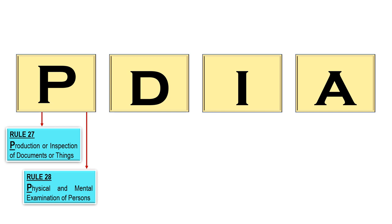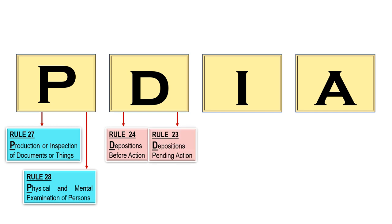How about letter D? Letter D is of course the famous deposition. Take note that when we talk about deposition, there is a deposition before action or before the case is filed — that is Rule 24. There is also a deposition pending action — that is Rule 23. And take note also that there is a deposition pending appeal, also Rule 24.